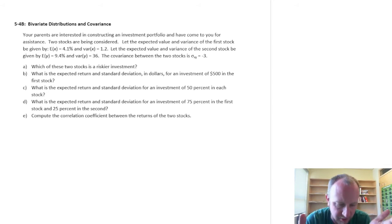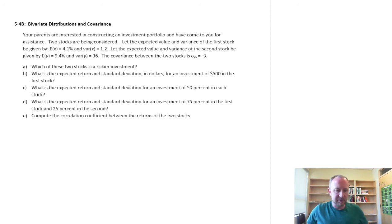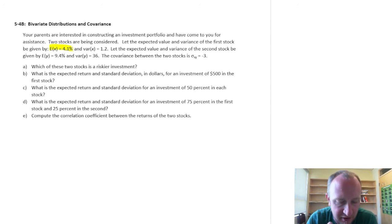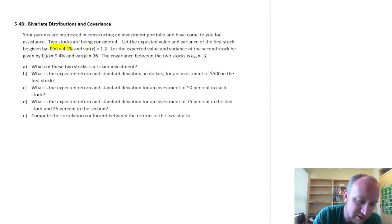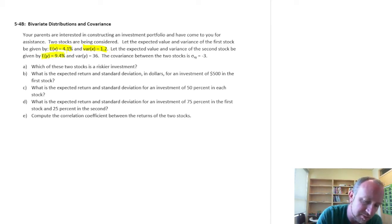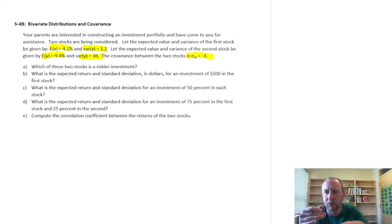Here's our example. We're talking to our parents — they want to construct an investment portfolio and have come to us for help. Two stocks are being considered. The expected return on the first stock is 4.1% per year with a variance of 1.2. The expected value of the second stock is 9.4 with a variance of 36. The covariance between these two stocks is negative 3, so they tend to move in opposite directions — as one goes up in value, the other tends to go down.